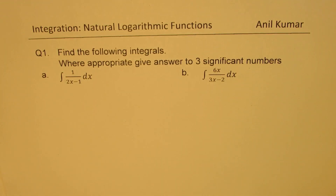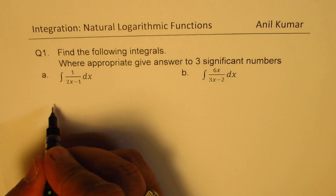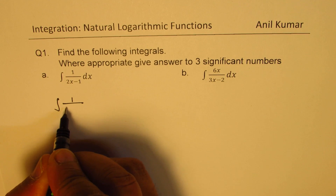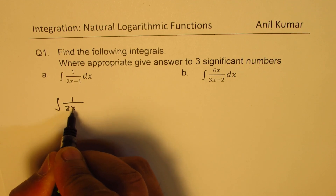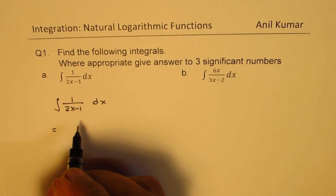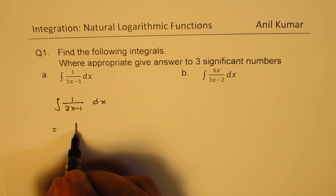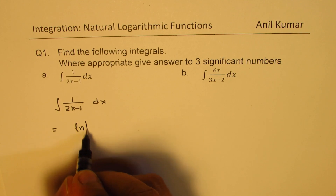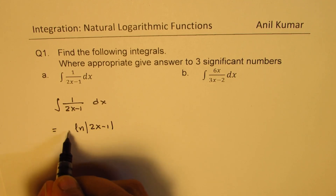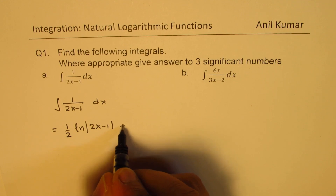Let's begin with the very first one, where the formula will be applied directly. We have integral of 1 over (2x minus 1) dx, which can be written as ln of the absolute value of (2x minus 1), times one-half, plus c.